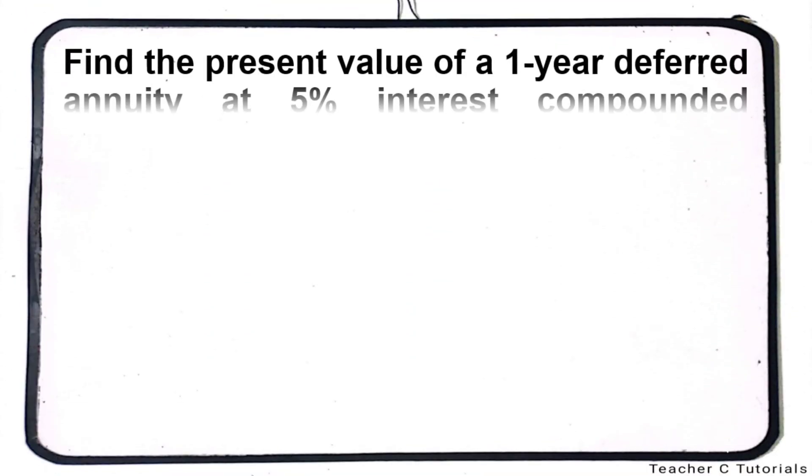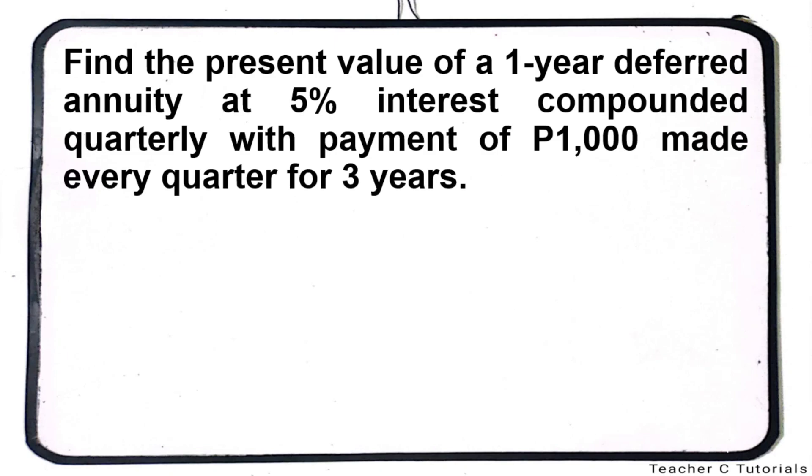Here's a sample problem. Find the present value of a 1-year deferred annuity at 5% interest compounded quarterly with a payment of $1,000 made every quarter for 3 years.